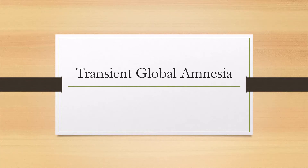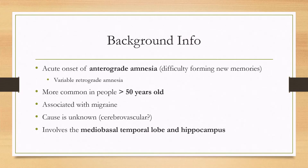Let's talk about transient global amnesia. This is a clinical syndrome characterized by the acute onset of anterograde amnesia — the key feature is difficulty forming new memories. There can be a variable degree of retrograde amnesia, but this is not required for the diagnosis. It occurs more commonly in people over the age of 50. The cause itself is unknown — possibly a cerebrovascular event or related to migraines — and it involves the medial basal temporal lobe and hippocampus.